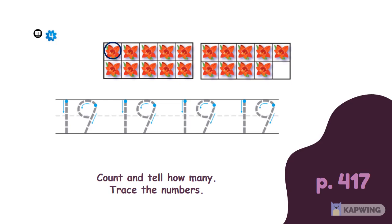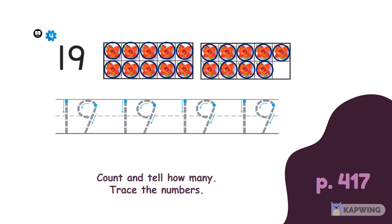1, 2, 3, 4, 5, 6, 7, 8, 9, 10, 11, 12, 13, 14, 15, 16, 17, 18, and 19. And again, you can show 19 as a number and you can also show 19 as a word. Then, we will trace the number 19.